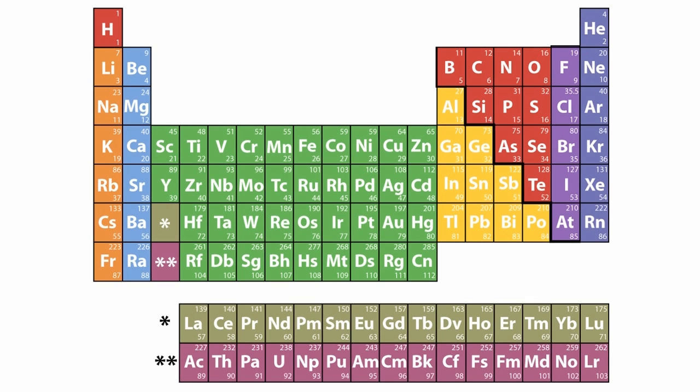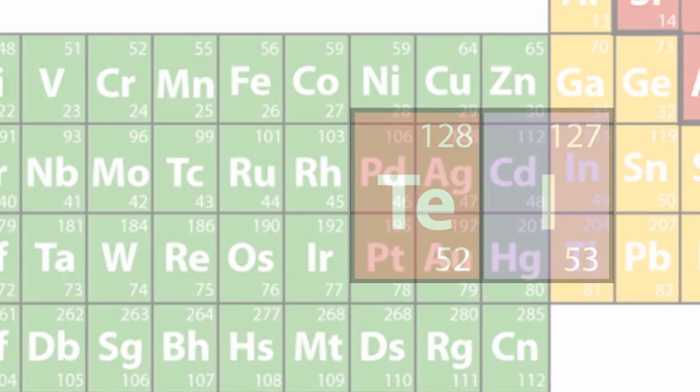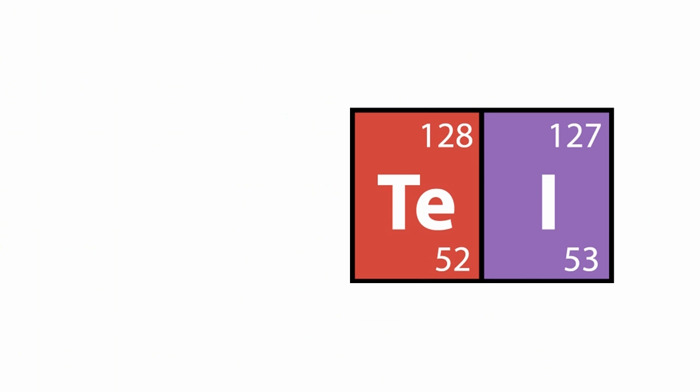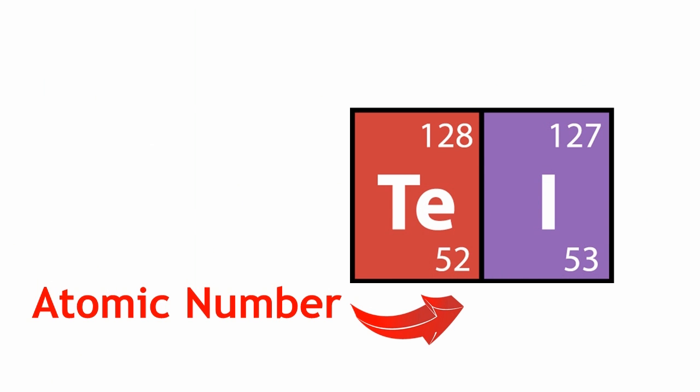In the modern periodic table, where the elements are ordered by their atomic number, tellurium, which has an atomic number of 52, would be put before iodine, which has an atomic number of 53, so they fit into their correct positions without breaking any rules.